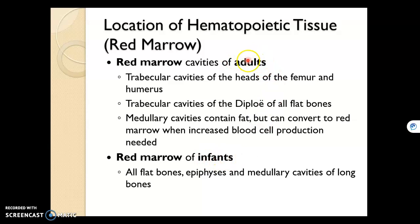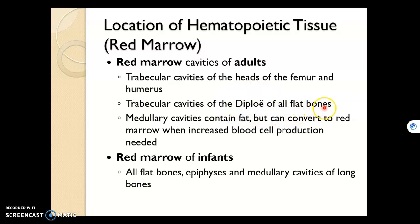In adults, we'll see red marrow in the spongy bone of the femur — the thigh bone — specifically in the trabecular cavities of the heads of the femur, or the epiphyses of the femurs. Also in the diploë of all flat bones, like the skull bone we saw in the previous slide.